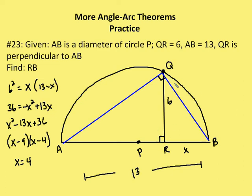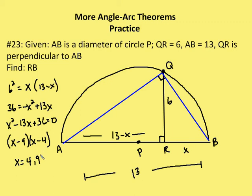Since angle Q is a right angle, I can apply the altitude-on-hypotenuse theorem: 6² = RB × AR, so 36 = X(13 − X), giving X² − 13X + 36 = 0. Factoring: (X − 9)(X − 4) = 0, so X = 4 or X = 9. However, X cannot be 9 because the radius is 6.5 and RB must be less than 6.5. Therefore X = 4.